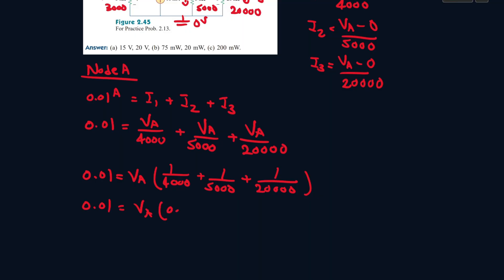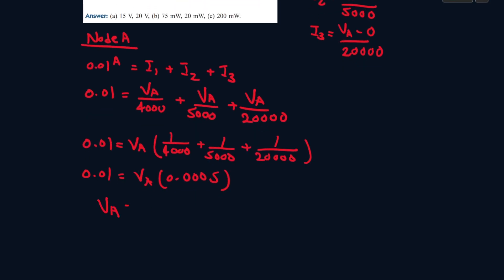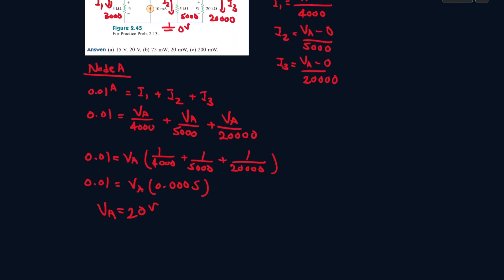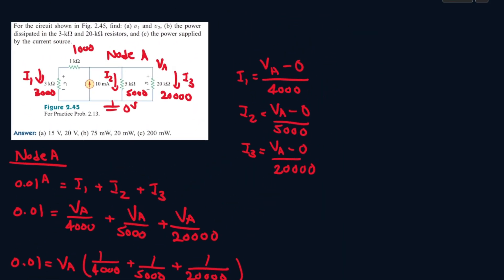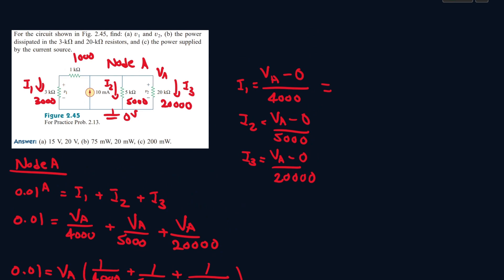Simplifying gives 0.0005. Dividing both sides by that, we get Va equals 20 volts. Using that, i1 is 20 over 4000 which is 0.005 amps, i2 is 20 over 5000 which is 0.004 amps, and i3 is 20 over 20000 which is 0.001 amps.